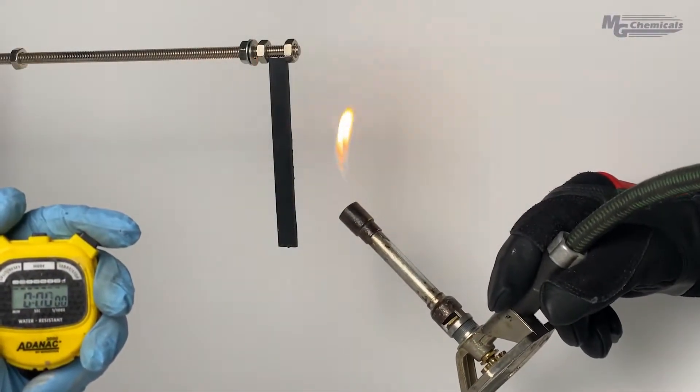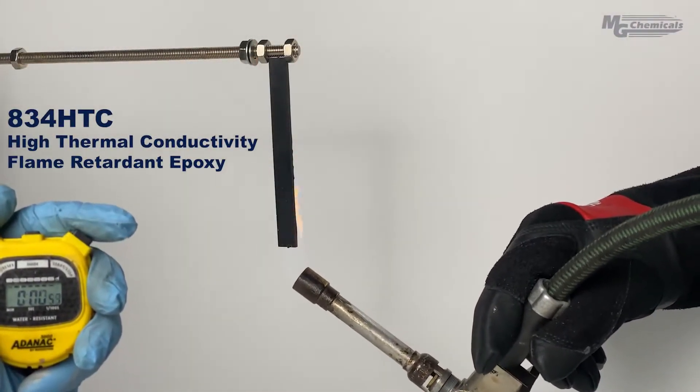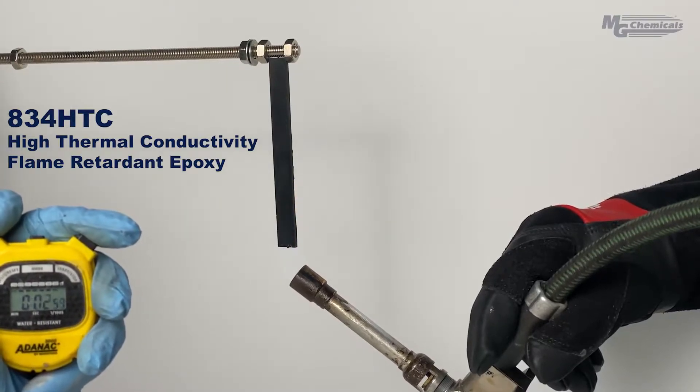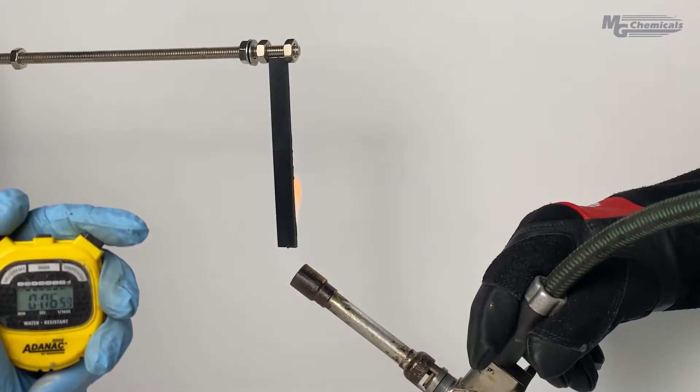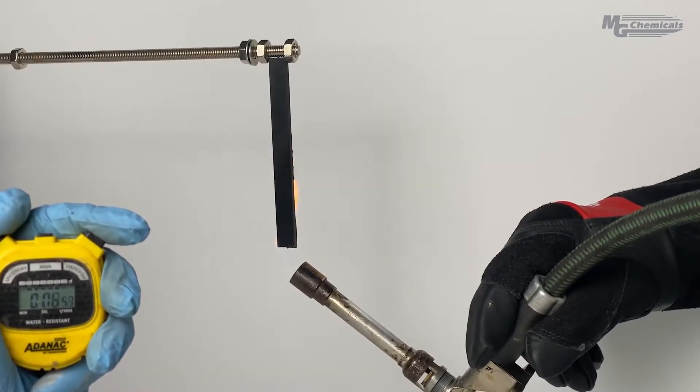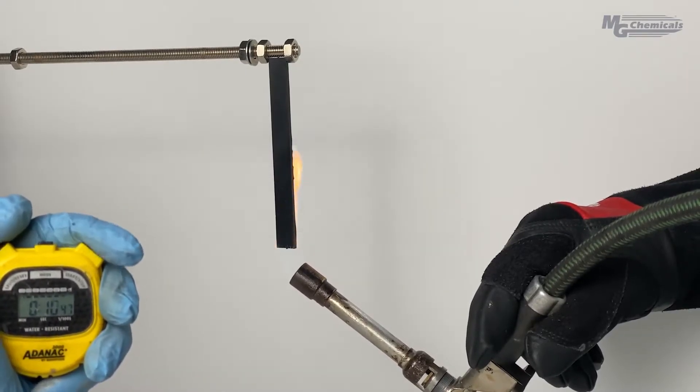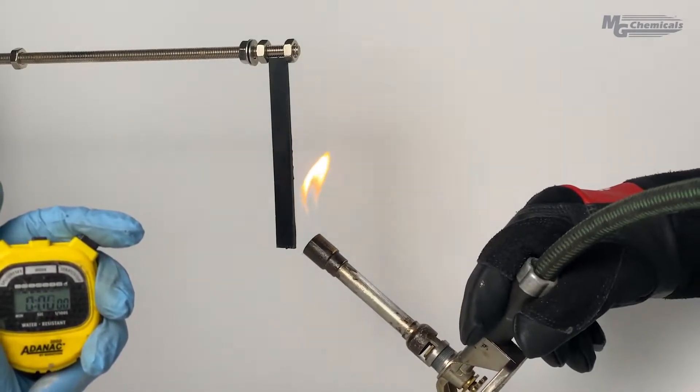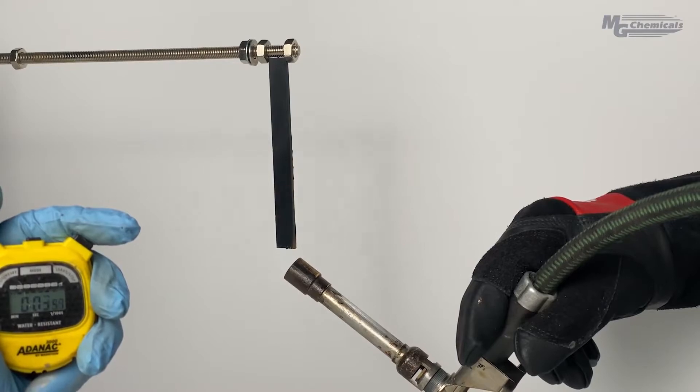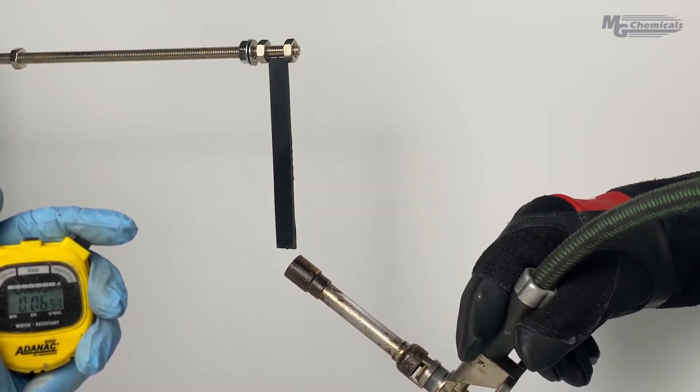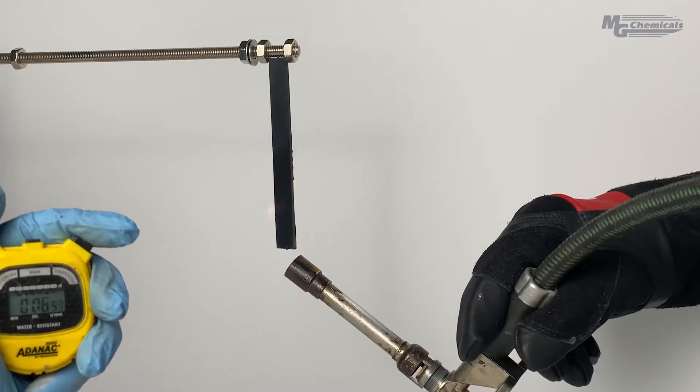Now, let's try the same test with 834HTC, a UL certified flame retardant epoxy. We introduce the flame for 10 seconds, then remove, and wait for the flame to extinguish. Once extinguished, we repeat for another 10 seconds. As you can see, the flame does not spread in this sample and quickly extinguishes once removed.